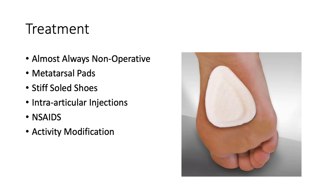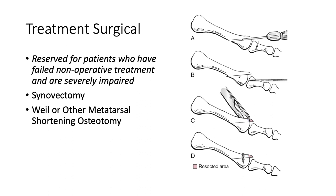Treatment for metatarsalgia is almost always non-operative and can be effective for many people, though it can also be difficult. This starts with metatarsal pads, stiff-soled shoes, intra-articular injections, NSAIDs, and activity modification. Give patients at least six months of non-operative treatment before considering surgery. Surgical intervention is reserved for patients who have failed conservative treatment and are severely impaired, as results are good but not great and some patients continue to have pain or are even made worse. Surgery typically involves synovectomy and a Weil or other metatarsal shortening osteotomy.